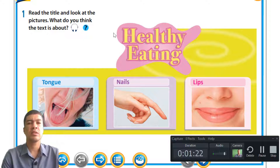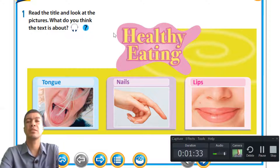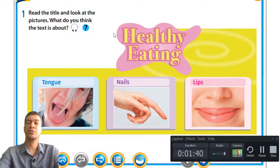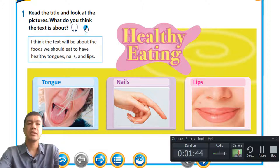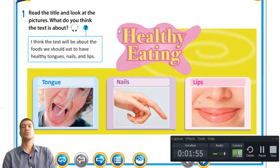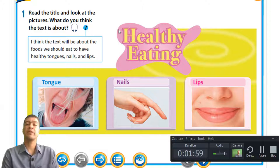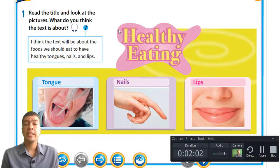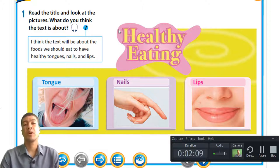From all three pictures, what can you assume the lesson is going to be about? We're looking at healthy eating, and the foods we eat have an effect on our bodies — our nails, lips, and even our tongue. I think the text will be about foods we should eat to have healthy tongues, nails, and lips. Fruits and vegetables play an integral part in our lives, as the word integral simply means they are important because they contain all the vitamins and minerals we need.